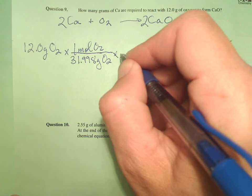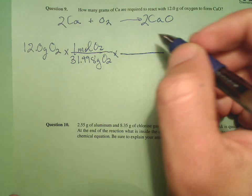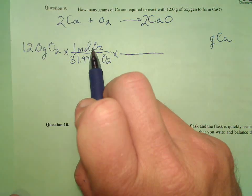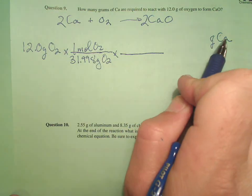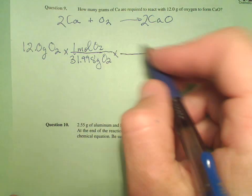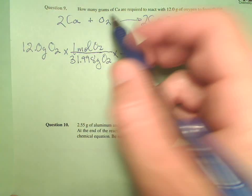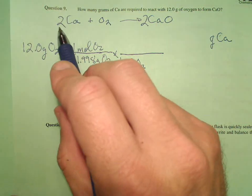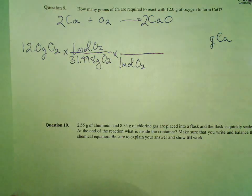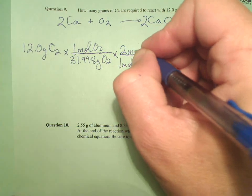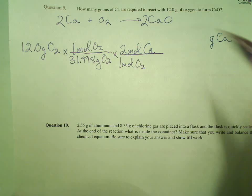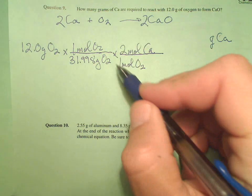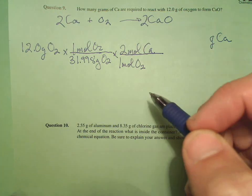Now I'm ready. Wait for it. Mole to mole ratio. So I know my mole to mole ratio has got to be from O2 to calcium, since that's where we're headed. So I look at my balanced equation and say, hey, one mole of O2 requires two moles of calcium. So there's my mole to mole ratio. Every stoichiometry problem has one.